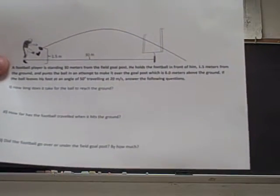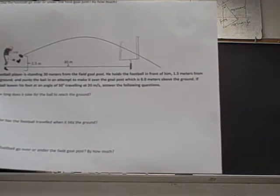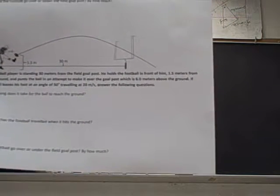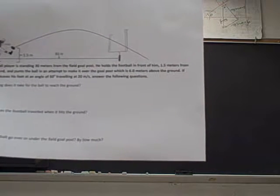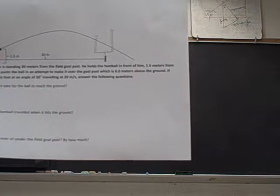So we have a football player who is standing 30 meters from the field goal post. He holds the football in front of him 1.5 meters from the ground and punts the ball in an attempt to make it over the goal post which is 6 meters above the ground.